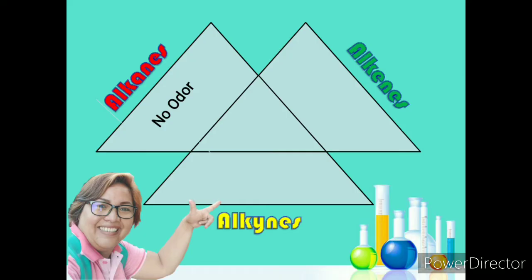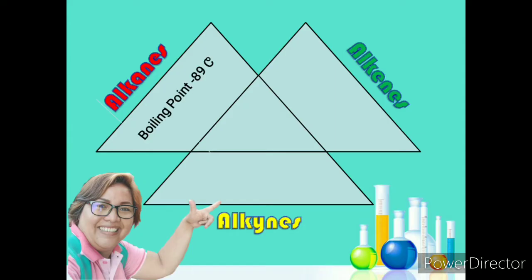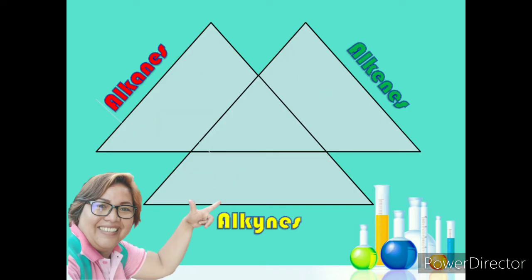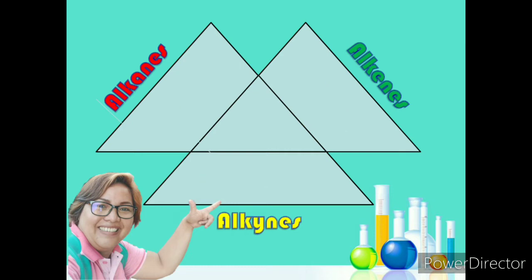Alkanes have no odor. Alkenes have a sweet odor. Alkynes have an unpleasant odor. Alkanes have a boiling point of negative 89 degrees Celsius, alkenes have a boiling point of negative 103.7 degrees Celsius, and alkynes have a boiling point of negative 84 degrees Celsius. Alkanes are saturated, while alkenes and alkynes are unsaturated. All of them are flammable, colorless, and insoluble.